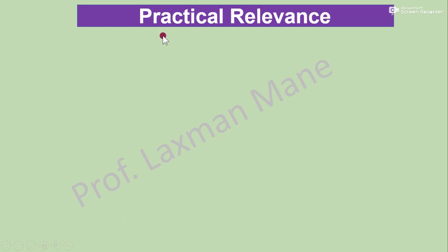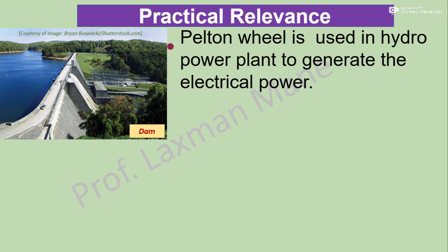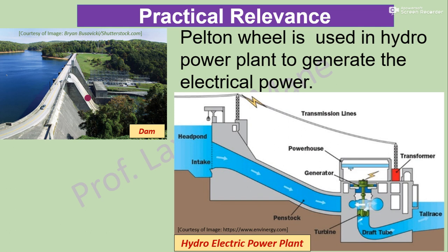Let us discuss the practical relevance of Pelton wheel. Pelton wheel is used in a hydro power plant to generate electrical power. A dam contains water with a huge amount of potential energy. When this water flows through a pipe called the penstock to the turbine location, potential energy is converted into kinetic energy, which is then converted into mechanical energy at the turbine. This turbine is coupled with a generator which converts mechanical energy into electrical energy, transmitted via transformer and transmission lines to the consumer.